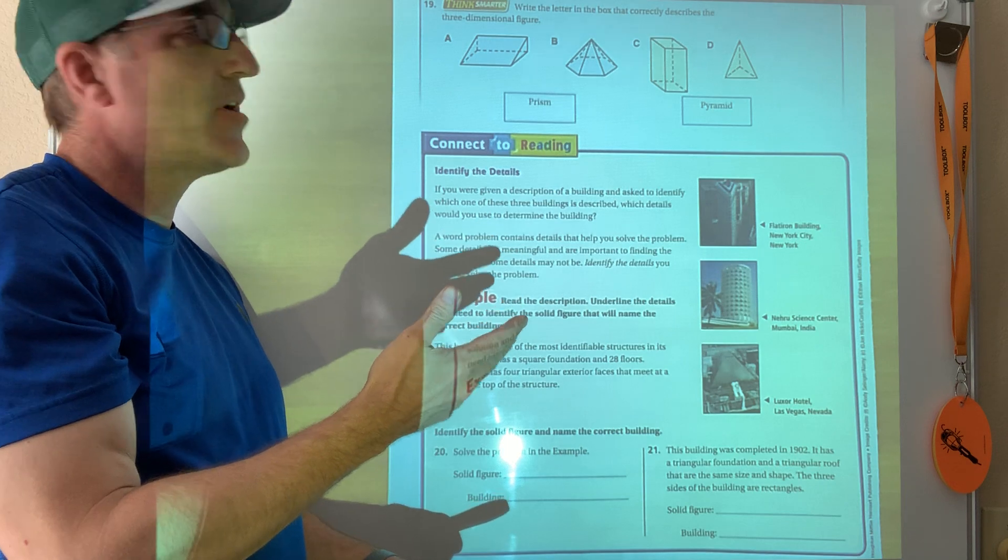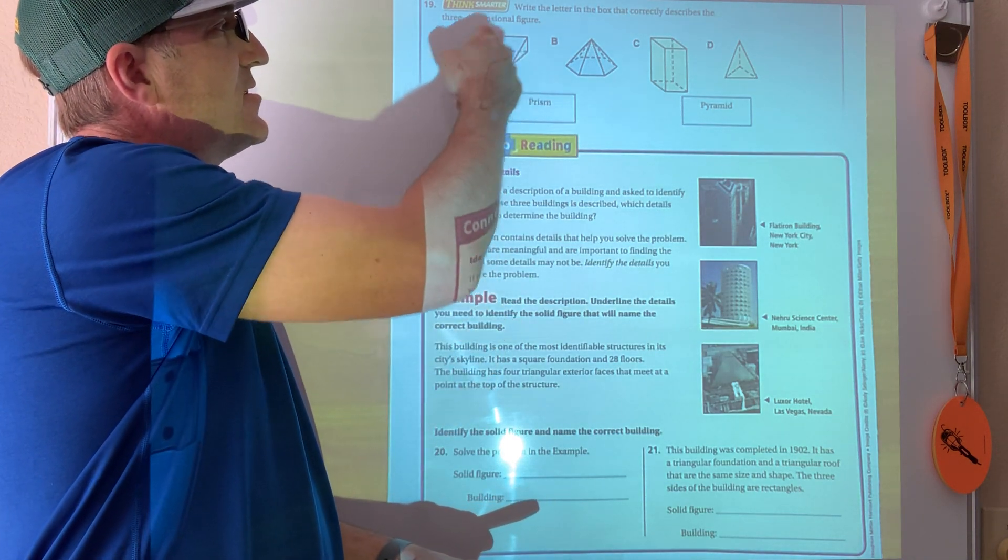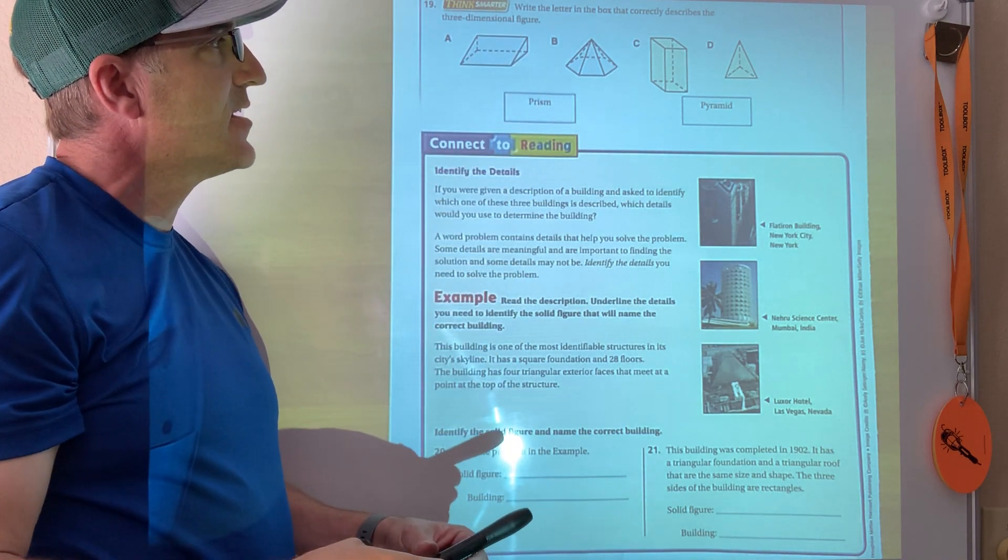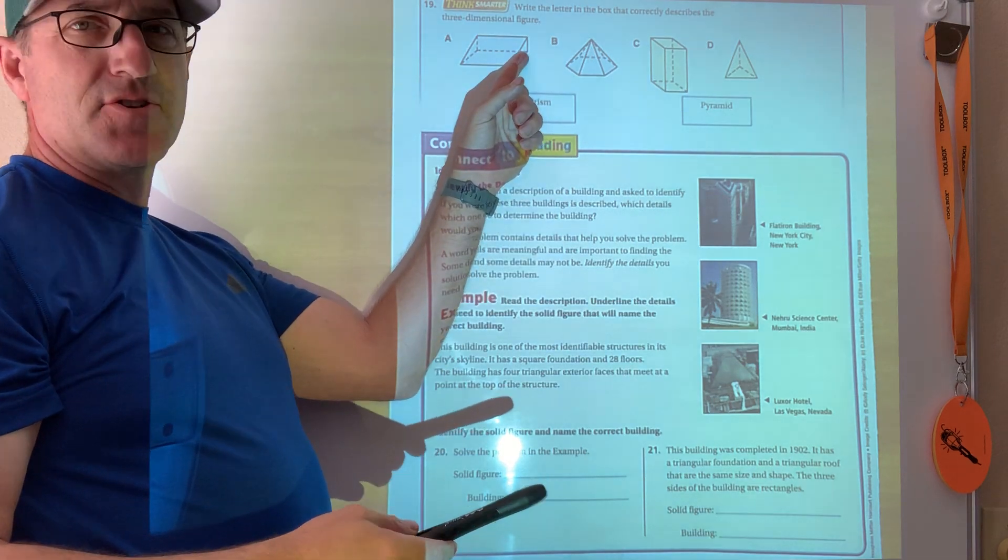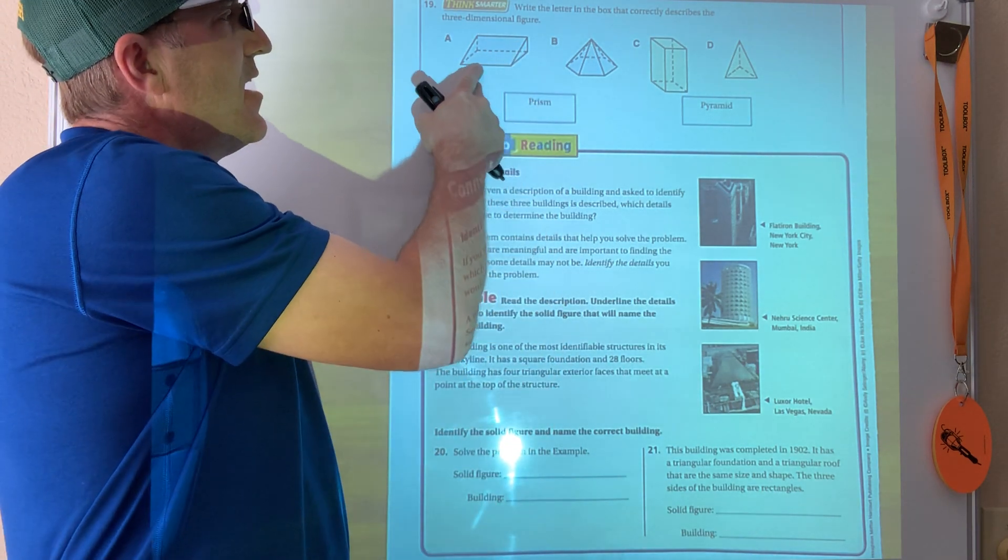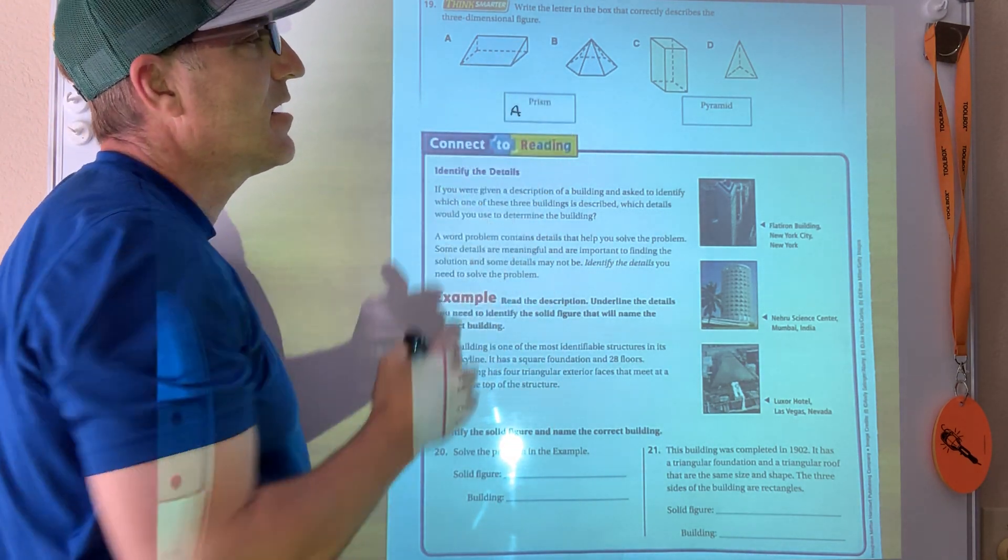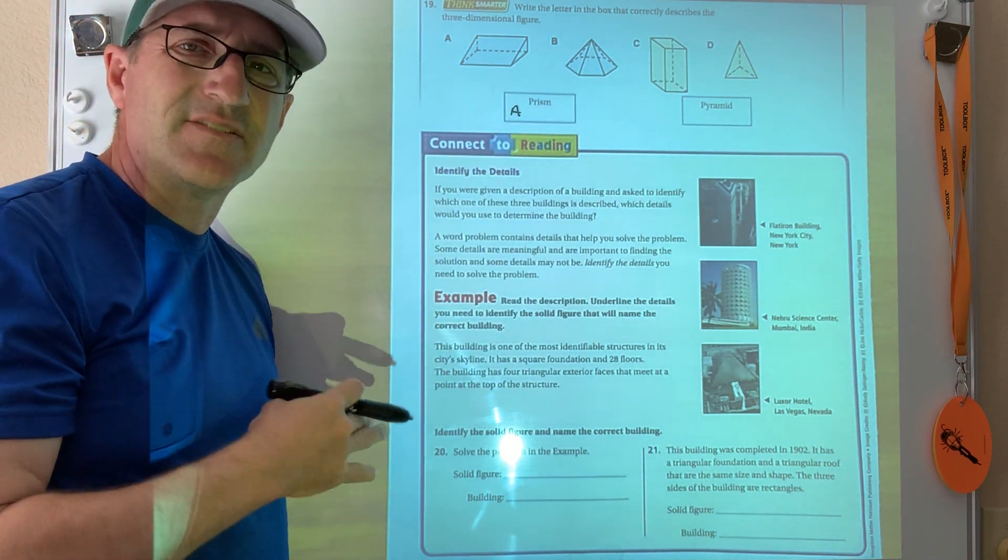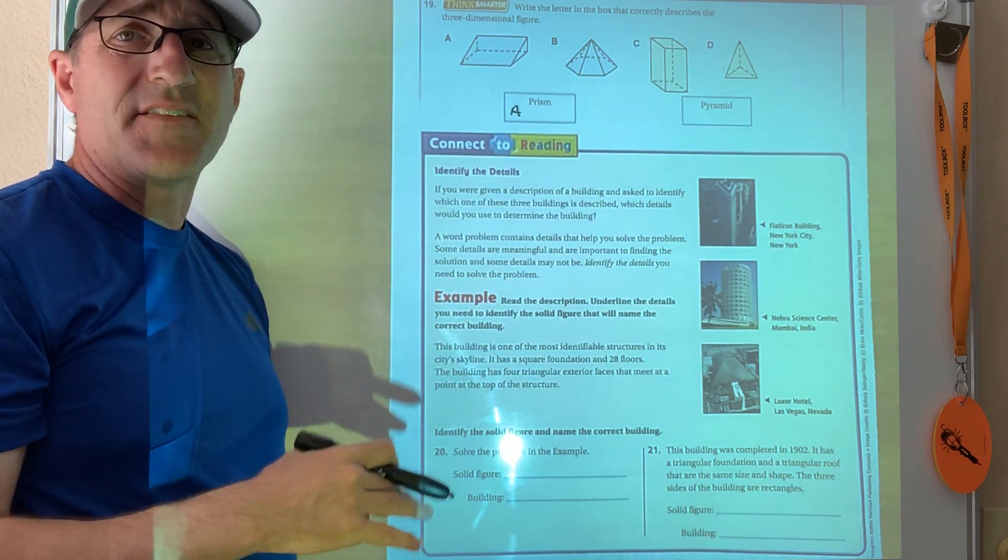They're actually prisms, right? I've got these rectangular sides and what is not a rectangular side right here, the triangle. So this A is a prism. It does not come to a point even though it has triangles in it. Those are actually the bases, not the faces.